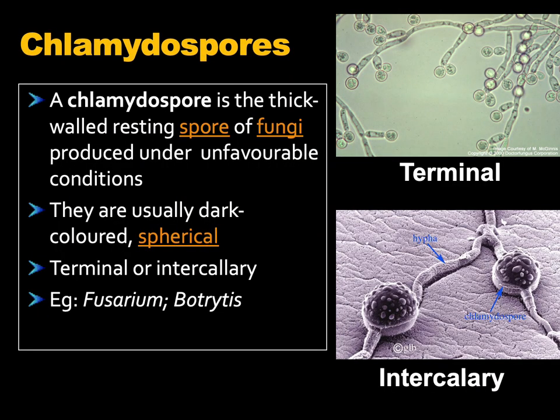Besides these structures, many fungi produce another special type of structure called chlamydospores. These are thick-walled resting spores of fungi, produced under unfavorable conditions. They are usually dark in color and spherical. They may be borne terminally — at the end of the mycelium — or they may be produced intercalarily, in between the mycelium. Organisms like Fusarium and Botrytis produce chlamydospores as resting structures in their growth and developmental stages.